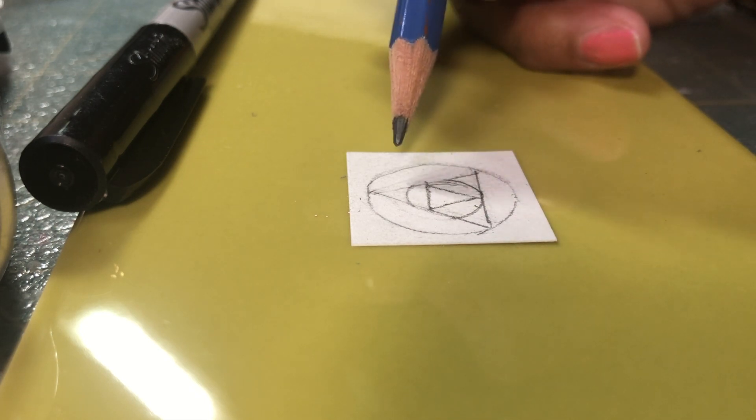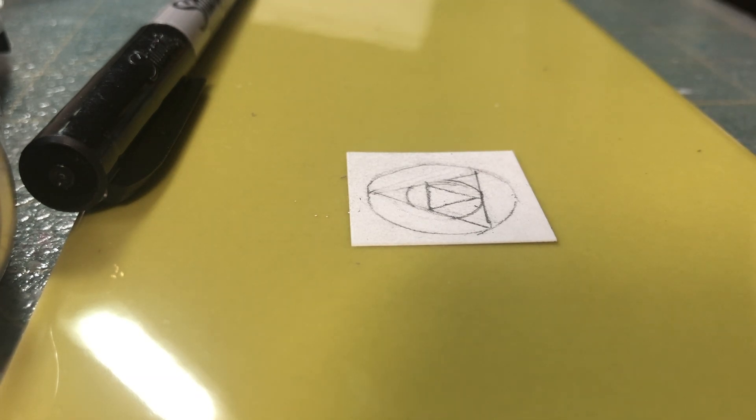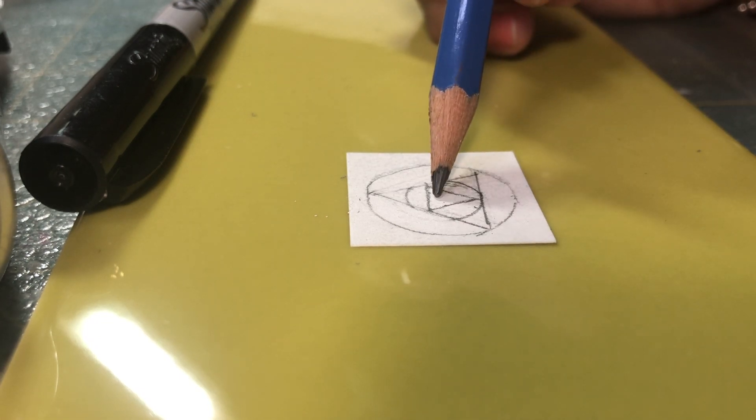And the upside down triangle because I mean I think it means something. So now I am going to take my pens and color in whatever's supposed to be colored in. And pretty much it's just this triangle.